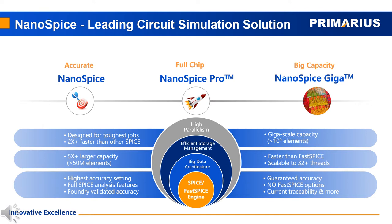In the SPICE simulation area, we have three solutions: Nanospice, Nanospice Giga, and Nanospice Pro. Nanospice is a high-performance parallel SPICE simulator that typically runs two times faster and has five times larger capacity.